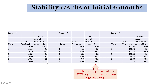For batch number one after six months we are getting 98.33 percent of the active; for batch number two it is 97.78 percent; and for batch number three it is 98.12 percent. The content drop at batch two — 97.78 percent — is more as compared to batch number one and batch number three.